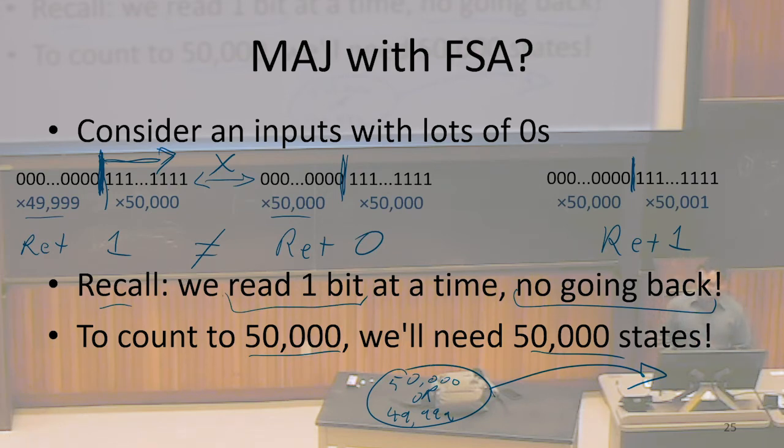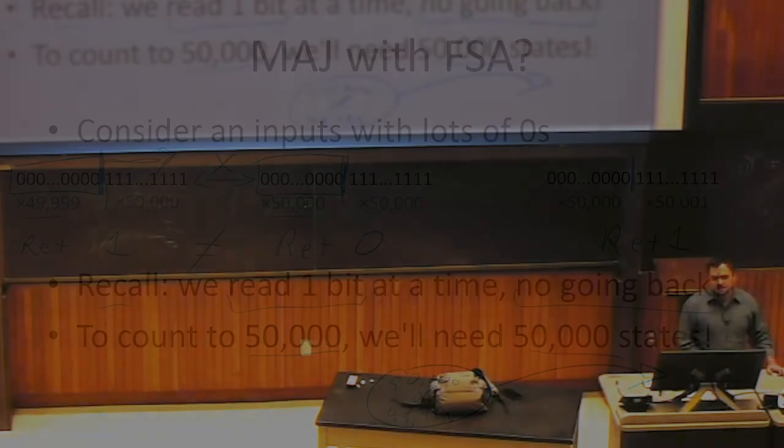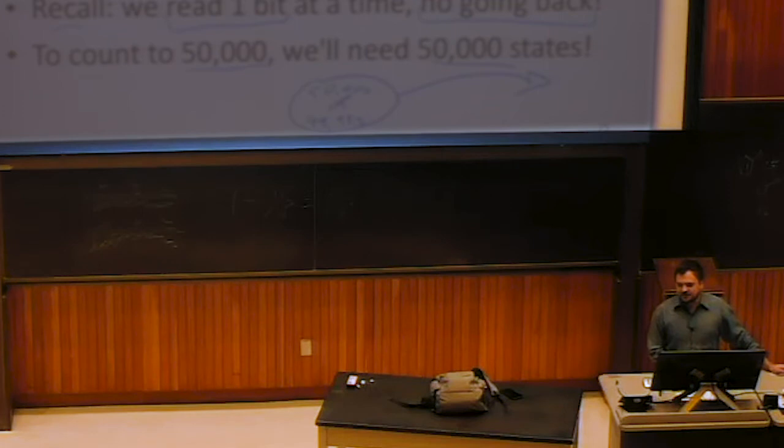So after I'm done processing the zeros, I need to be in a different state when I've read 50,000 of them compared to when I've read 49,999 of them. This means if I want to give the right answer for this string of 49,999, and I want to give the right answer for this string where I had 50,000, I would need at least 50,000 states. If I wanted to give the correct answer when I had 50,001 zeros, I would need 50,001 states. If I wanted to give the right answer for 50,002 zeros, I'd need 50,002 states. Basically, the problem here is that more zeros requires more states.